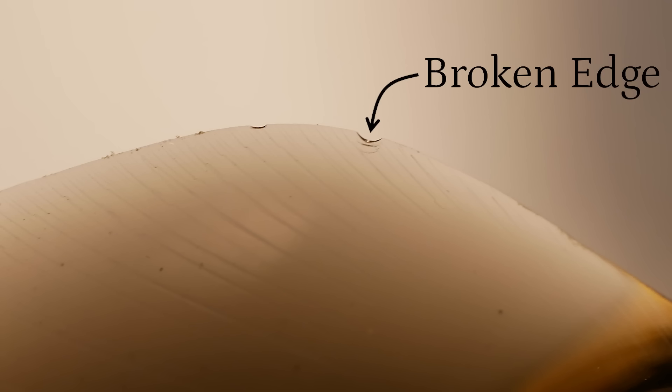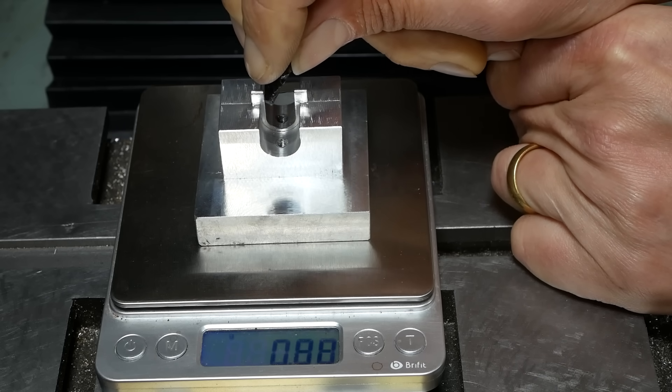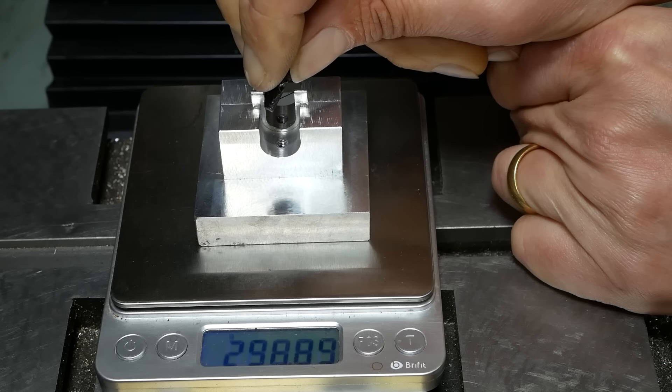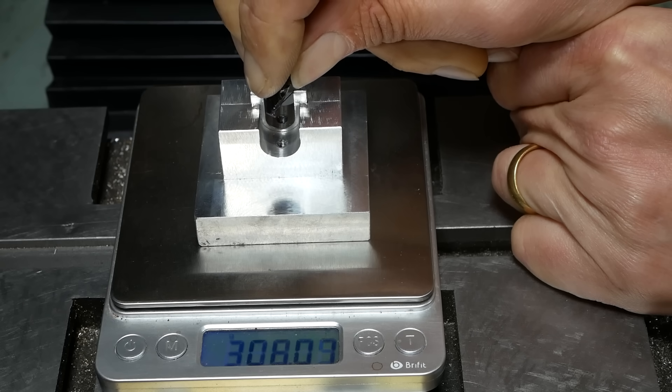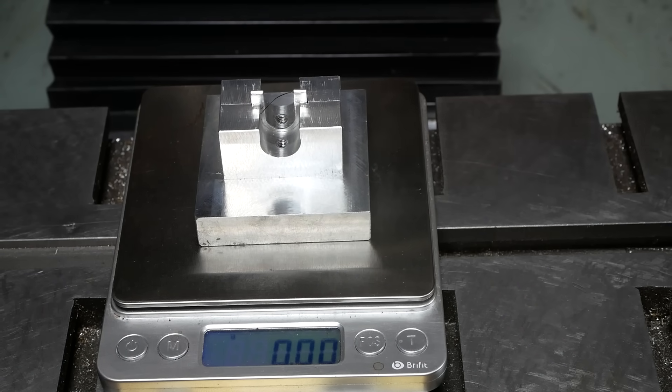This raises some questions. Although obsidian may well be the sharpest edge, what does this really mean? If the edge is too thin to be practical, can it actually be called sharp? It's feasible that a thicker obsidian edge would perform better on the BESS test because of its higher strength.